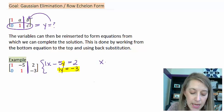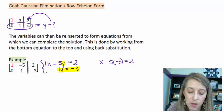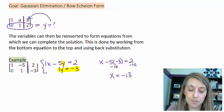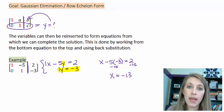So that gives me x minus 5 times my negative 3 is equal to 2. This gives me positive 15. So if I were to subtract 15 from both sides, that would give me the answer of x equals negative 13. And so we have the answer here.